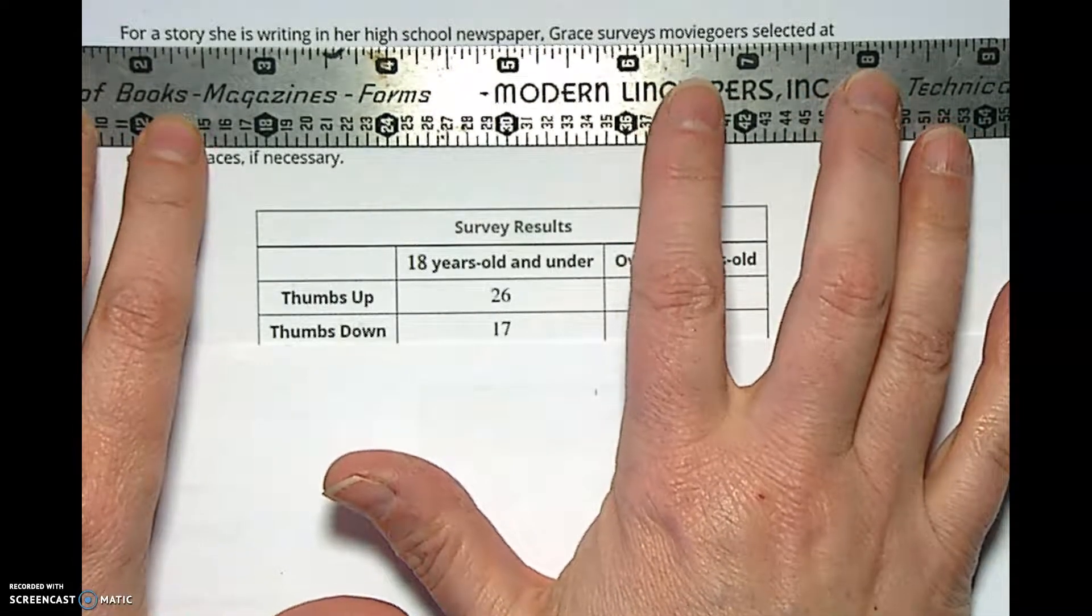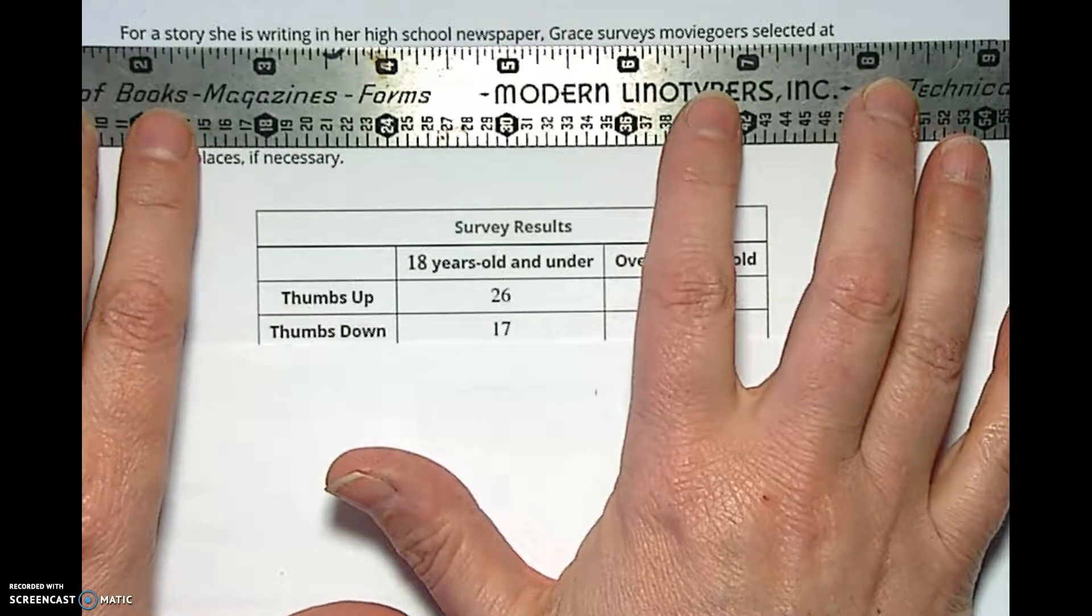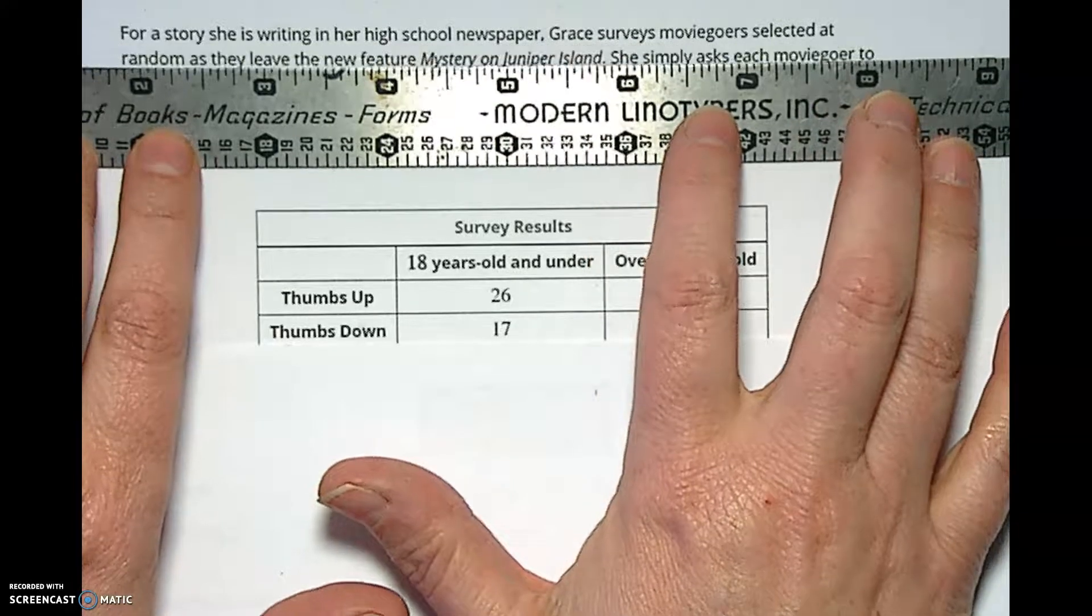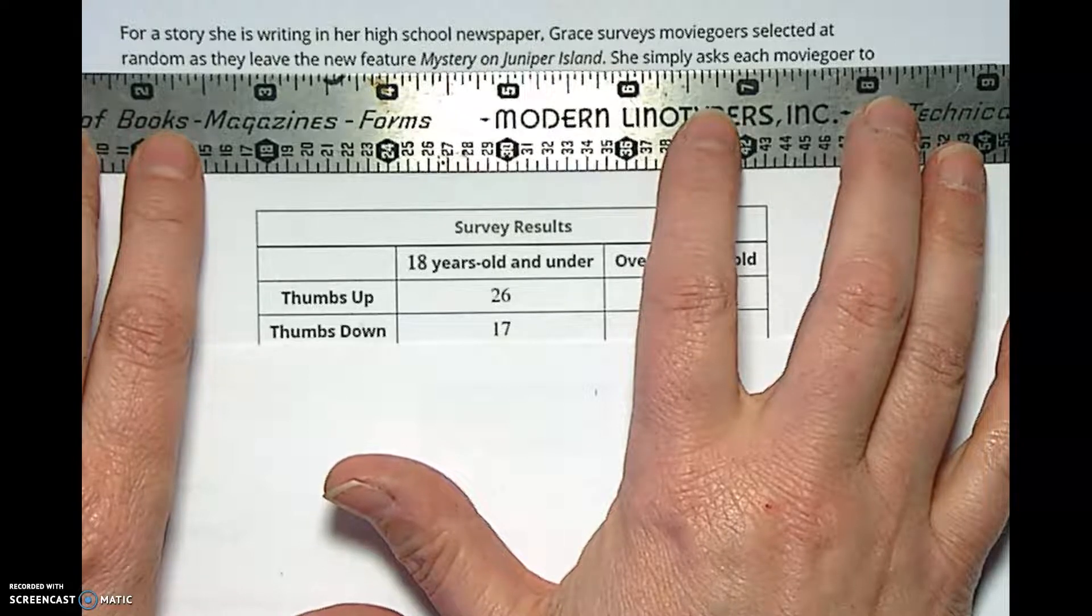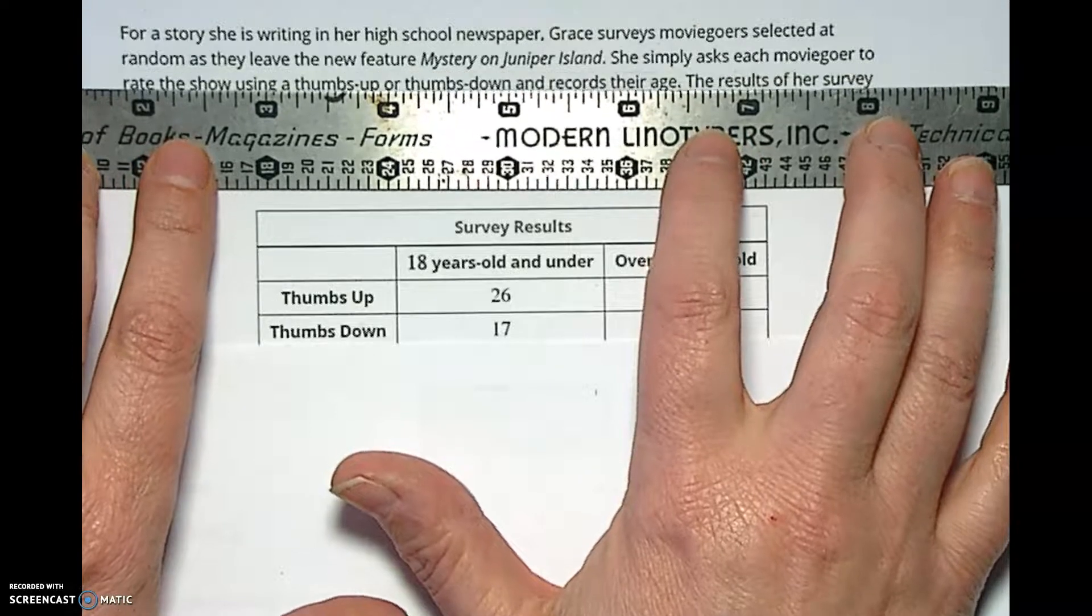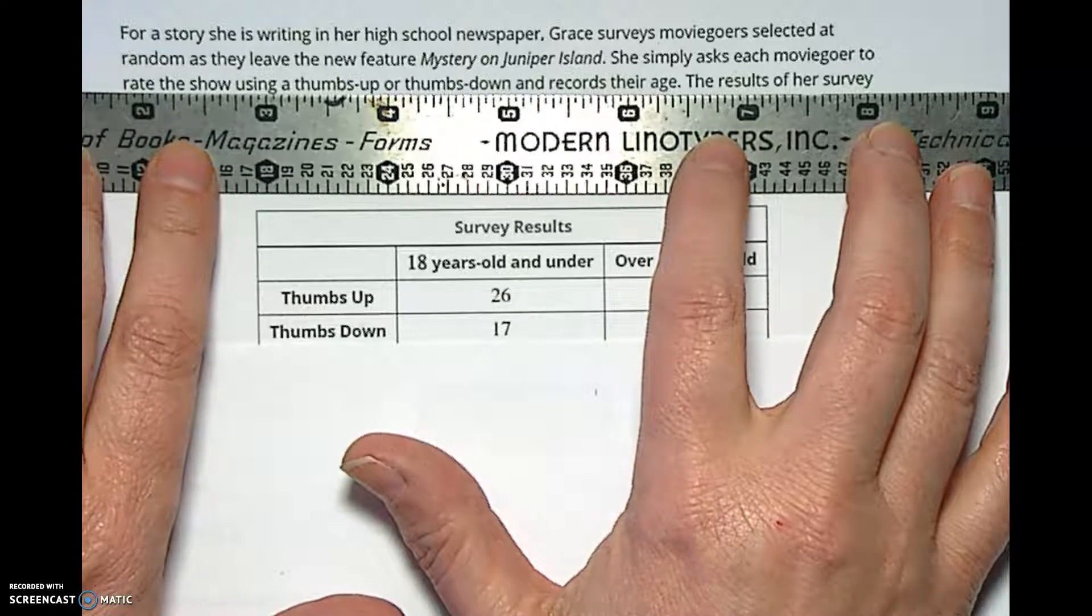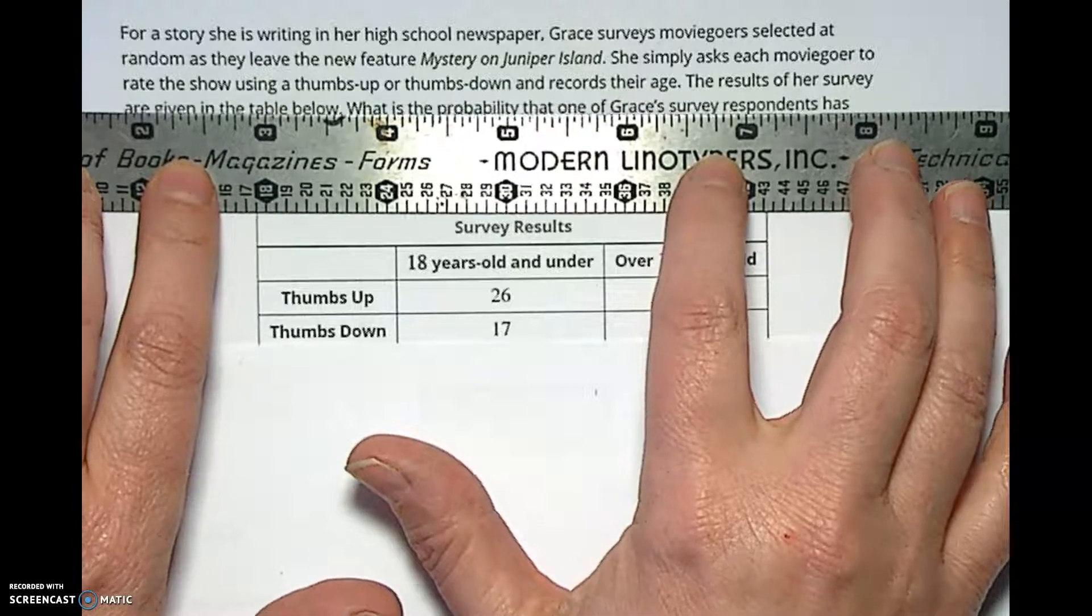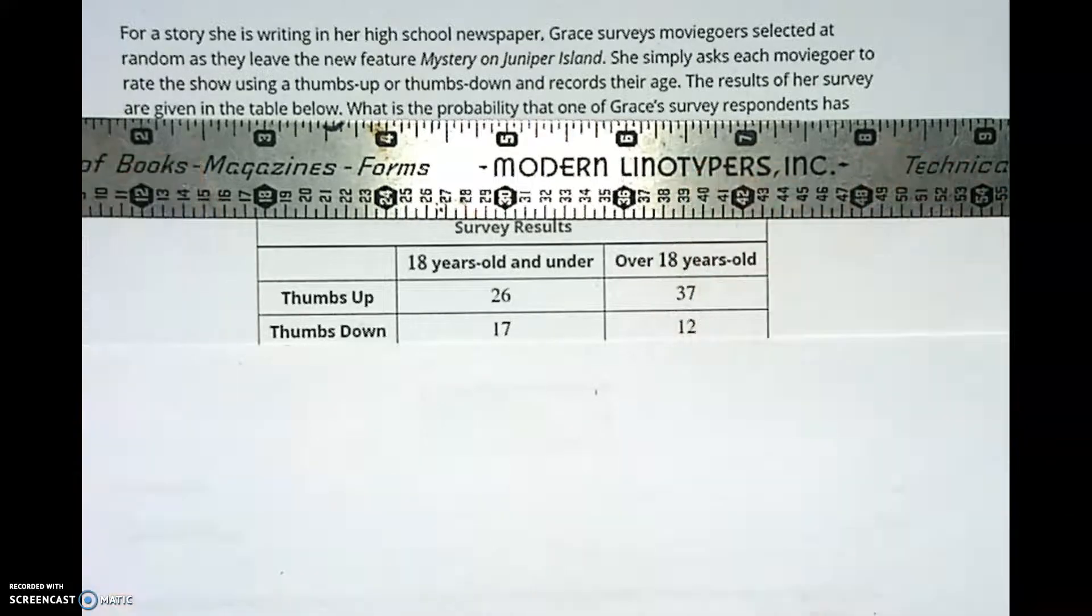For a story she is writing for her school newspaper, Grace surveys moviegoers selected at random, which is a good way to do it, as they leave the new feature Mystery on Juniper Island. She simply asks each moviegoer to rate the show using a thumbs up or thumbs down and records their age. The results of her survey are given in the table below.